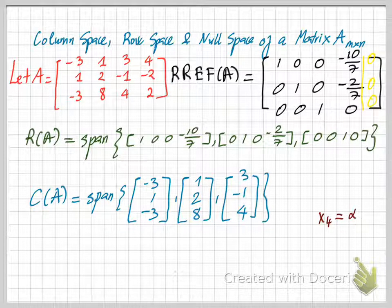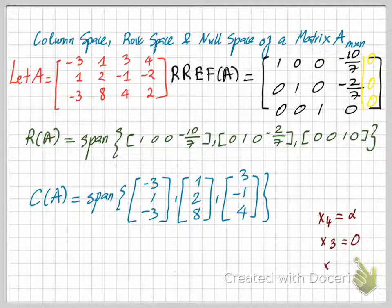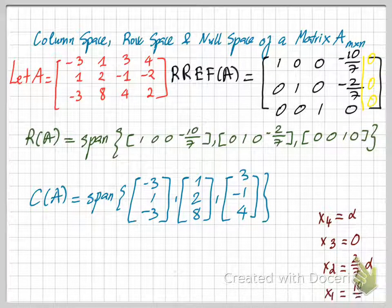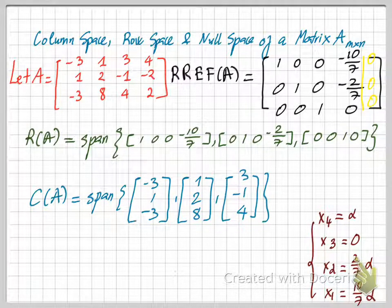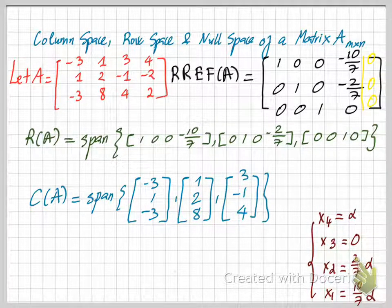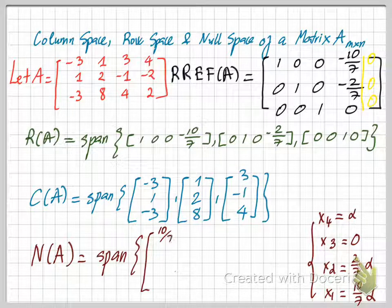So x4 is a free variable and we call it alpha. We find x3 is 0, x2 is 2 over 7 alpha, and x1 is 10 over 7 alpha. Since we only have one free variable, we know that we only need one vector to span the null space of A, and that vector can be found based on these solutions.